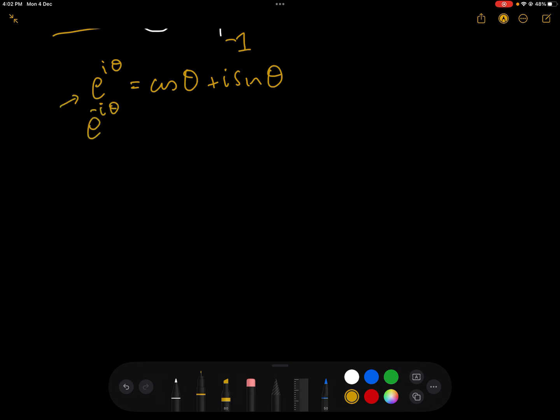which is e^(-iθ), which is cos(-θ) + i·sin(-θ), which equals cos(θ) - i·sin(θ), because cos(-θ) is the same as cos(θ), and sin(-θ) is -sin(θ).